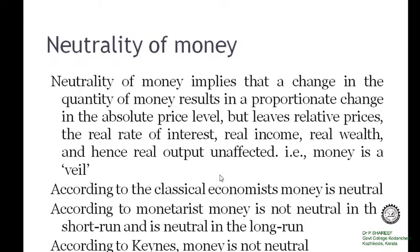Neutrality of money implies that a change in the quantity of money will lead to a proportionate change in the absolute price level, while relative prices and real variables like output and employment are unaffected. According to classical economists, the role of money is neutral — money is just a veil; it acts only as a cover. The change in money supply will lead to changes in the price level alone and does not affect real variables like output and employment.